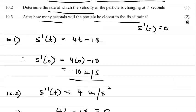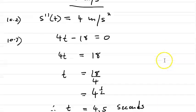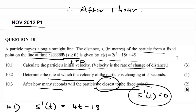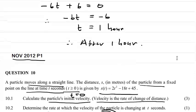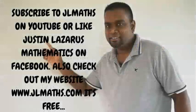After how many seconds will the particle be closest to the fixed point? Because it's closest to the fixed point, you find the derivative of the function and equate to zero. Rates of change means when is something changing — for example, velocity is the rate of change of distance. Please subscribe to JR Maths and check out all the videos on JRMaths.com.